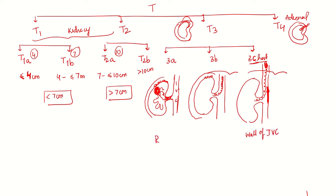So the 3a is renal vein, 3b is IVC below the diaphragm, and 3c is IVC above the diaphragm.